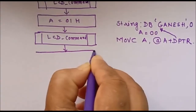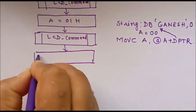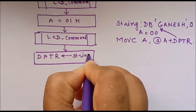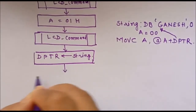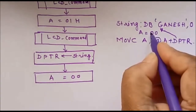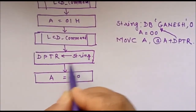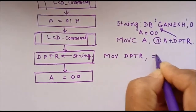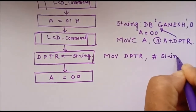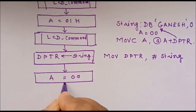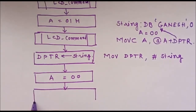We point DPTR to the first character of the string. In the DPTR register we store the address of the string using the instruction: MOV DPTR, #STRING, which stores the address of the first character of the string in the DPTR register. We then initialize the accumulator with 00H. Now we are ready to read data from the memory location pointed to by DPTR.